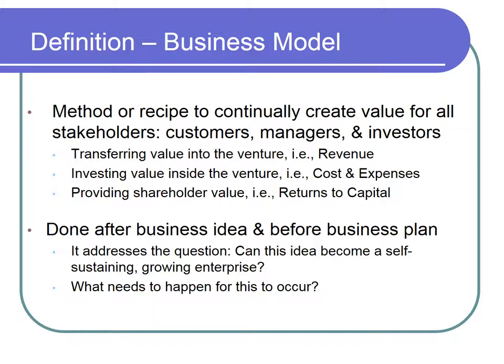So they want to have returns associated with that which are greater than they would have had otherwise — that motivates them to continue to offer capital to your business. Those are the three elements that you want to have happening in your business. The business model talks about how all of that is going to come together to create this going concern. It's generally done after you've looked at an idea, recognized it, evaluated it in the context of existing business and industry incumbents, and how one fits and how you design the model.